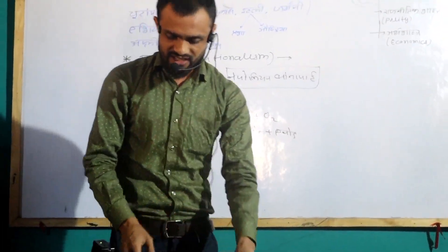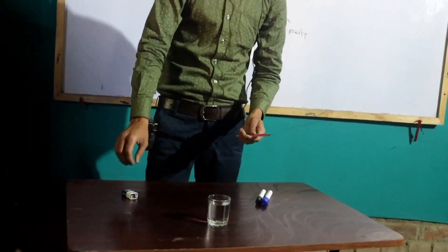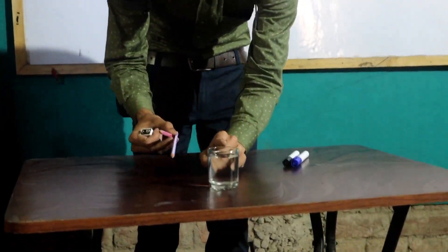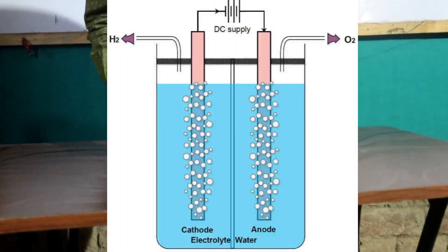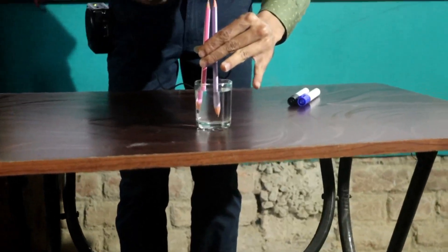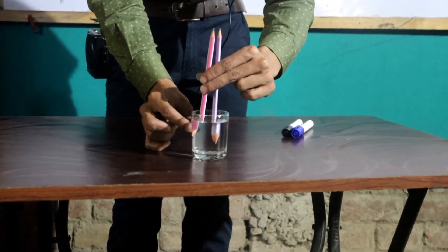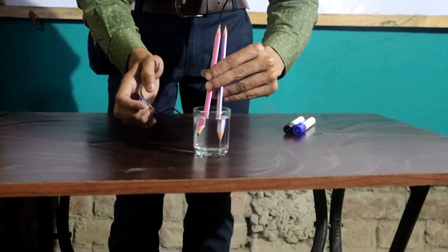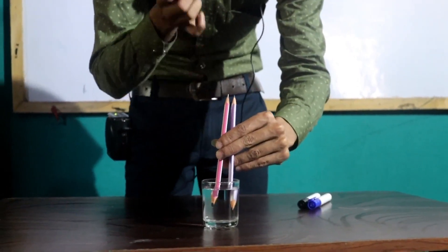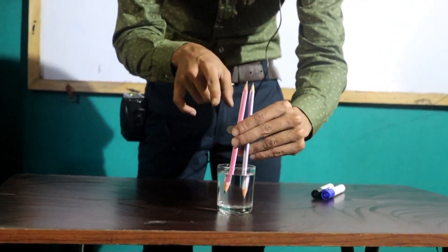We are going to see that in the glass there is water, and we are going to take this pencil. Now we are going to look at the pencil inside. We are going to put it in both, and we will provide water from this. You can see that the pencil is not seen as the pencil, but if you touch it you will see that bubbles will be released from this when there is gas.